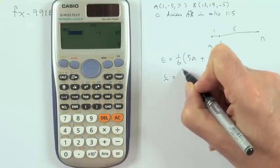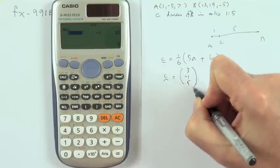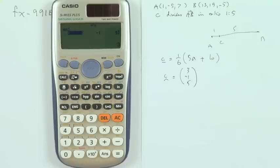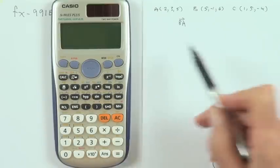So C would have been 3, negative 1, 5, which means that C is the point 3, negative 1, 5. Fairly straightforward. Did it save an awful lot of time? Don't really know, but it would check your arithmetic. Another common problem is finding the angle between two vectors. So try this.